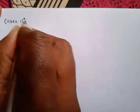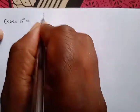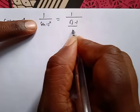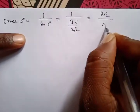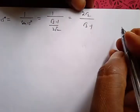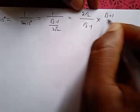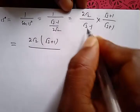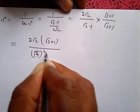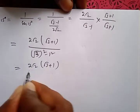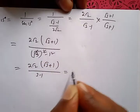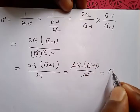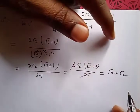For cosec 15° = 1/sin15° = 1/[(√3-1)/(2√2)] = 2√2/(√3-1). Rationalizing by multiplying by (√3+1)/(√3+1): numerator = 2√2(√3+1); denominator = 3-1 = 2. So cosec 15° = √2(√3+1) = √6 + √2.